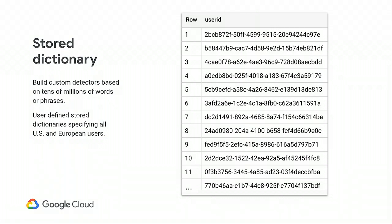For a while now we've supported custom dictionaries, which were ideal when you had a short list of sensitive words to scan for. But they didn't work if you had a list of words that changed frequently or if your list was very long. This brings us to stored dictionaries. Stored dictionaries are easy to update and support tens of millions of entries. They're great for things like user ID dictionaries — there's no pattern or regular expression to detect those, but given a stored dictionary, DLP can find them in both structured and unstructured data.